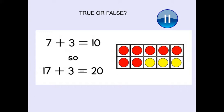Okay, true or false? Seven add three equals ten. So, 17 add three equals 20 — is that true or false? You could have a go at proving or disproving this using your tens frames, counting objects, or even a number line. It's up to you how you figure it out, but is it true or false? Pause the video, work it out, and we'll have a look on the next slide.